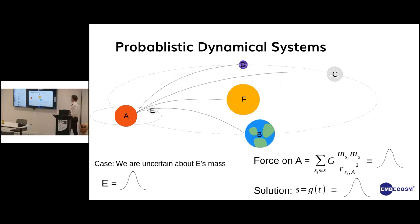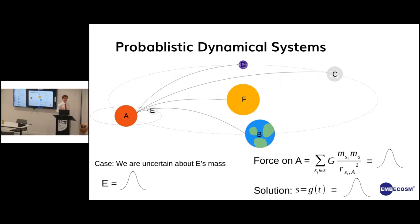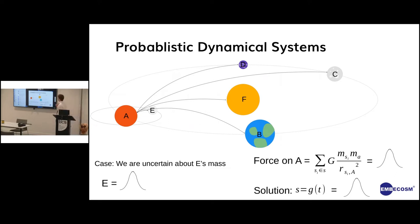One thing we can do with dynamical systems is put probabilistic elements in them. Sometimes we have either statistical randomness or uncertainty about things in our dynamical system, and that's something we can account for. It changes how we look at the problem a bit but doesn't change the ultimate goal. Say we have uncertainty about planetary body E — there's a moon orbiting A — the result is that we have uncertainty about E and so we have uncertainty about all the things that E affects.